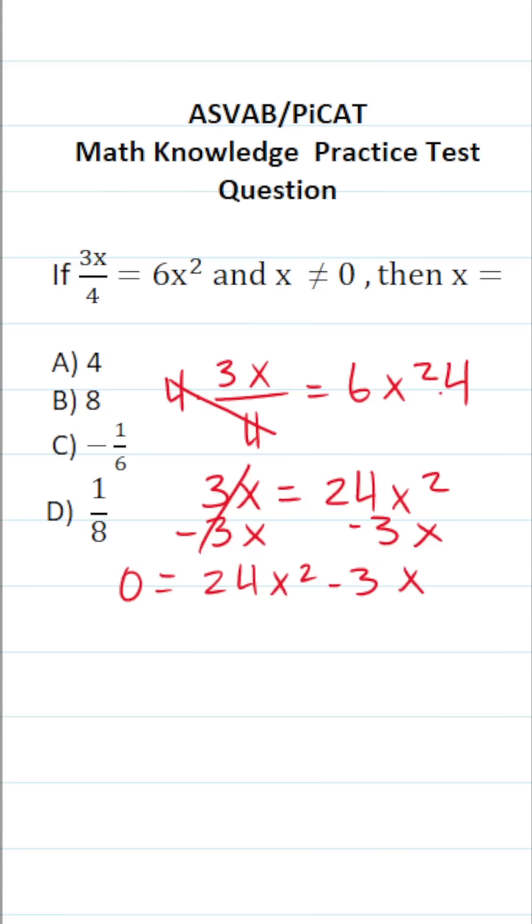And typically, we write equations where the 0 is on the right-hand side. So that's what I'm going to do. I'm simply going to rewrite this to be 24x squared minus 3x equals 0.